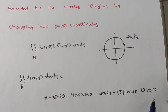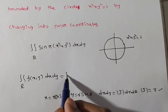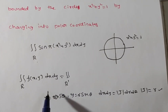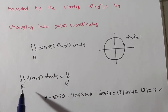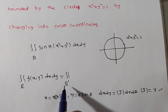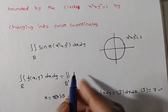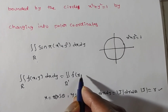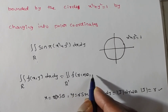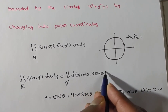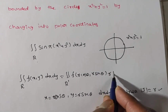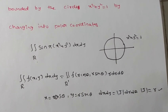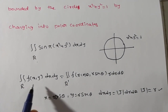The region R' now has limits in terms of r and θ instead of x and y. In place of x we substitute r cosθ, in place of y we substitute r sinθ, and dx dy becomes the Jacobian r dr dθ. The x-y limits will be changed into r-θ limits, where r is the radius and θ is the angle occupied across the quadrants.